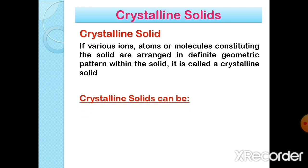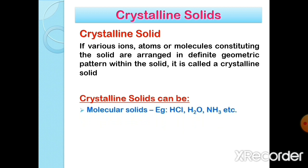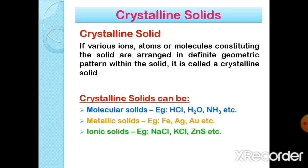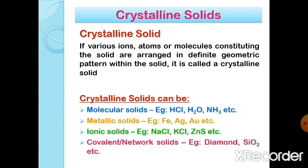If various ions, atoms, or molecules constituting the solid are arranged in a definite geometric pattern within the solid, it is called a crystalline solid. There are four types of crystalline solids: molecular solids (examples: HCl, H₂O, NH₃, etc.), metallic solids (examples: iron, gold, silver, etc.), ionic solids (examples: NaCl, KCl, ZnS, etc.), and covalent or network solids (examples: diamond, silicon dioxide, etc.).